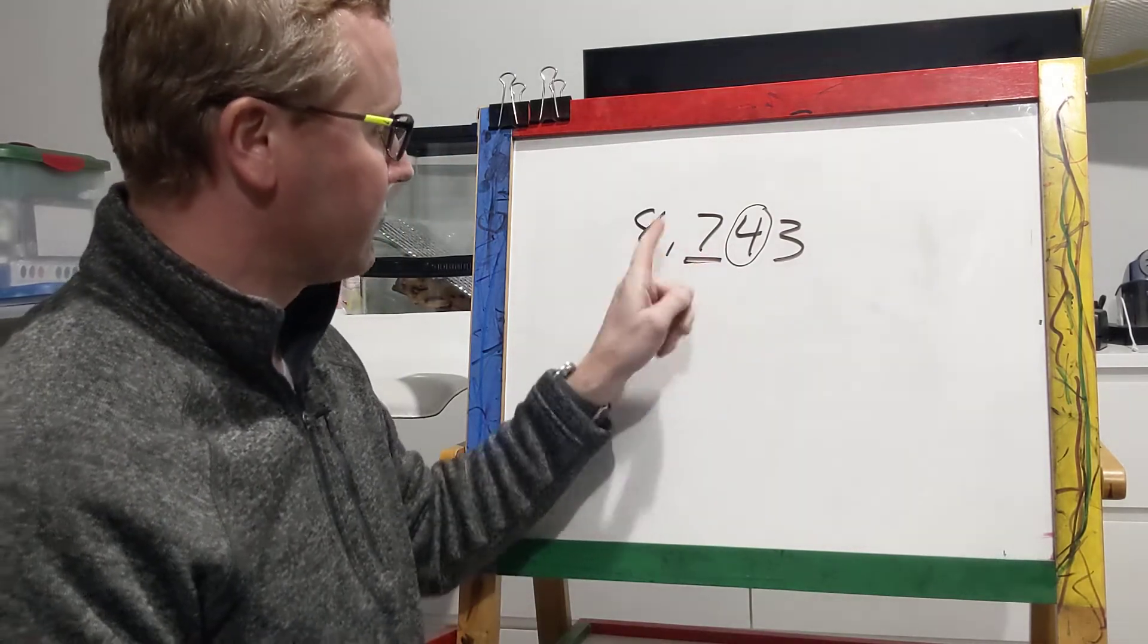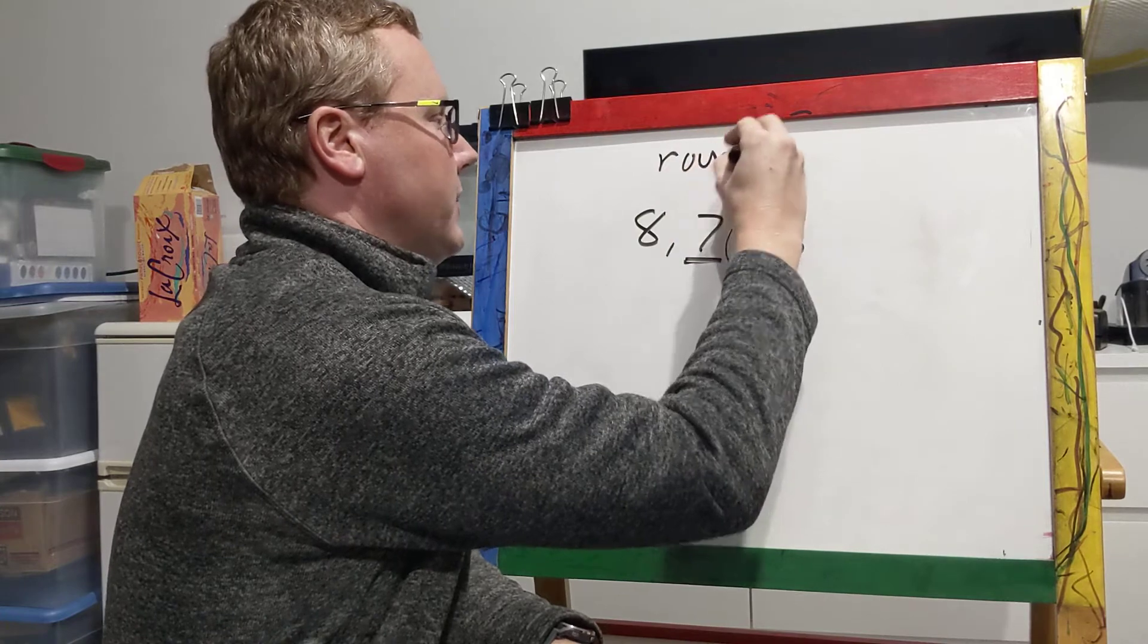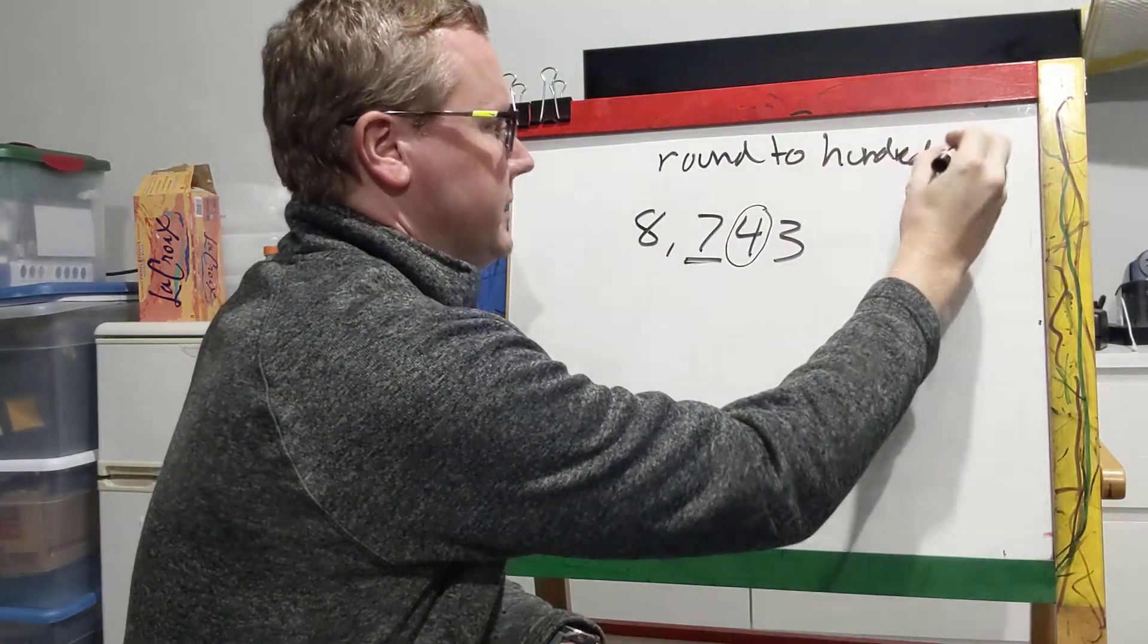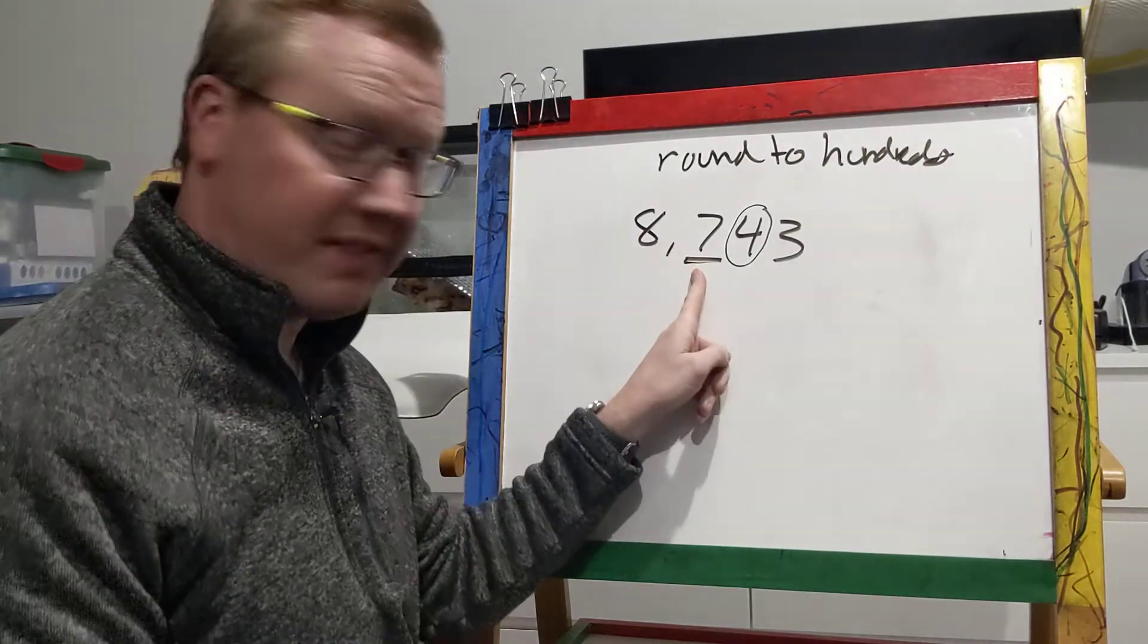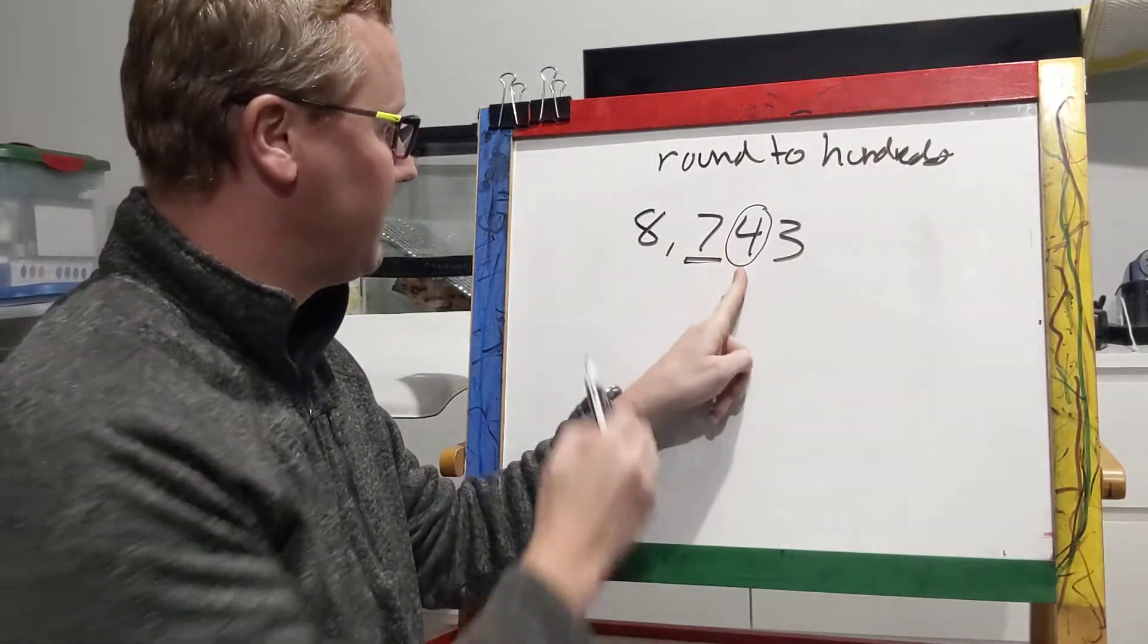If it's five through nine, so five, six, seven, eight, or nine, we're going to add one to this number. So when I said round to the hundreds place, we look at the seven, we find our hundreds place. Over here our four tells us to keep this number the same.